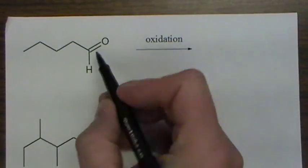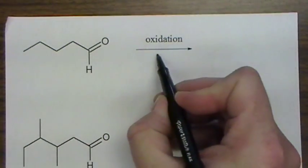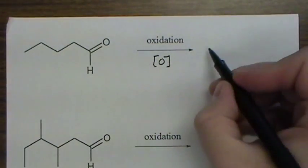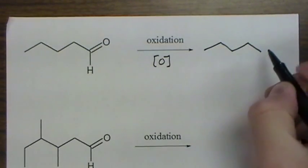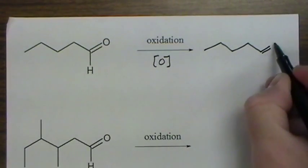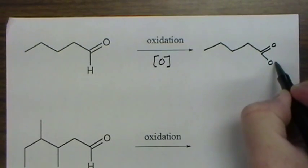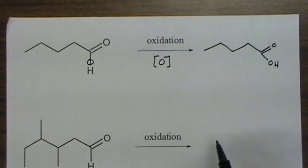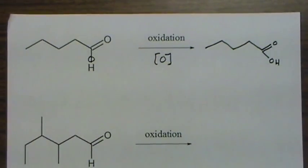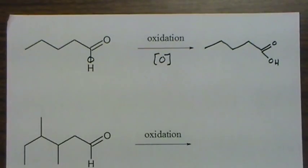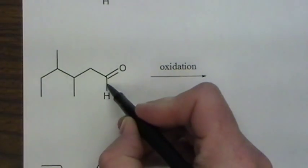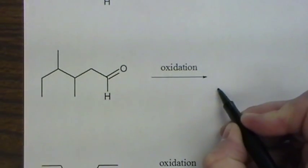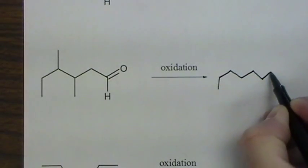Now if you have an aldehyde and you're oxidizing it, a lot of times they'll just put O in square brackets like that - you're going to add another oxygen to the species and you create a carboxylic acid. So an oxygen just gets added here. If you have a ketone...